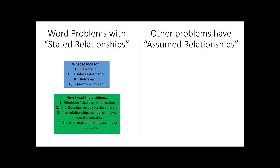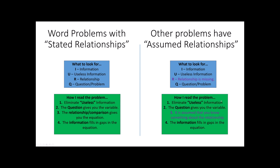Today we're going to look at a different type of application problem — those problems that have assumed relationships. When we talk about assumed relationships, we have essentially the same pattern to our word problems, but in these cases the relationship is missing from the problem. We still eliminate useless information, the question still gives us the variable, but it's assumed that you know something ahead of time about the relationship. We're still going to use the information they provided to fill in gaps in that relationship.